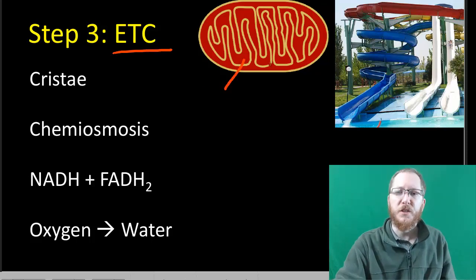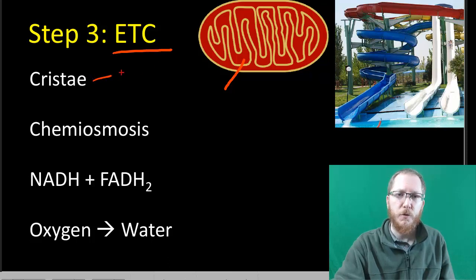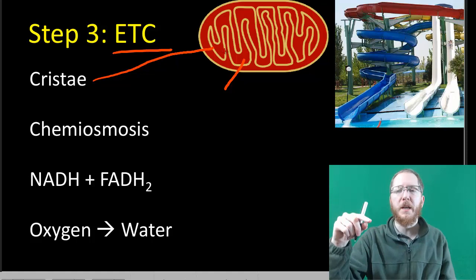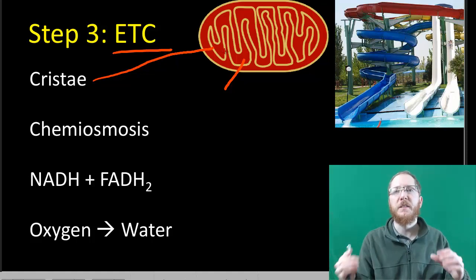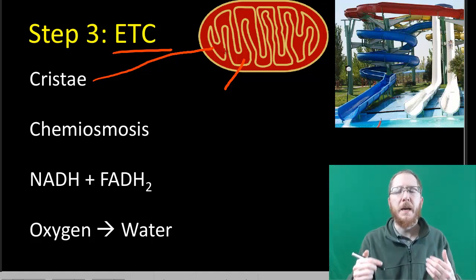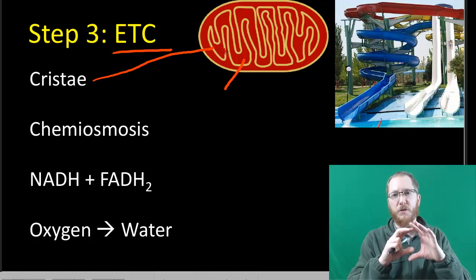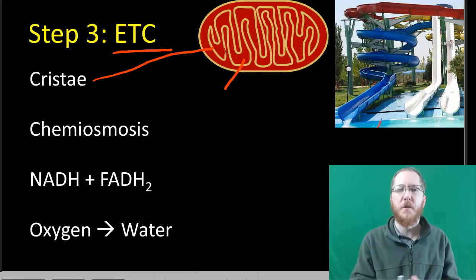We're now going to move to the cristae, which is that folded membrane. The reason for those folds is it increases the surface area, so it allows us to embed more electron transport chains than we would if it was just a straight membrane. It increases our efficiency.